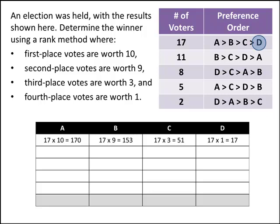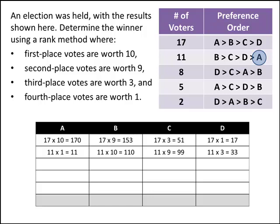For the next row, B is ranked in first place. We have 11 voters ranking B in first place, so that's 11 ballots times 10 points, giving B 110 points. C is ranked second: 11 times 9 gives 99 points. D is ranked third: 11 times 3 gives 33. And A is ranked fourth: fourth place votes are worth 1, so 11 times 1 gives 11. For each spot in this chart, we multiply the number of ballots times the points the candidate earns per ballot.